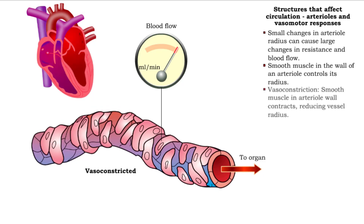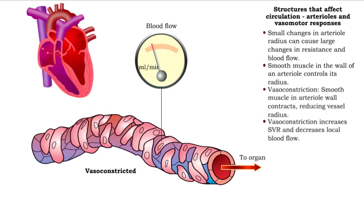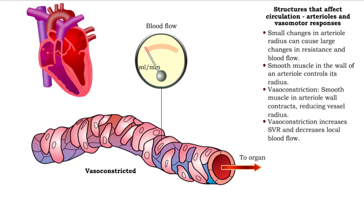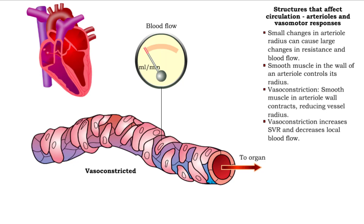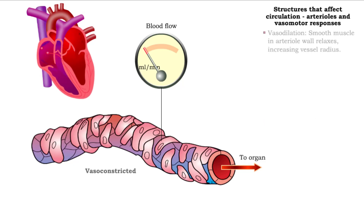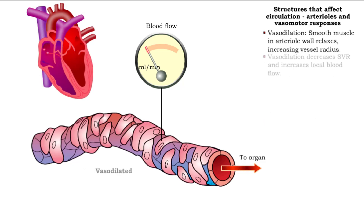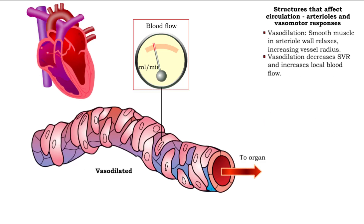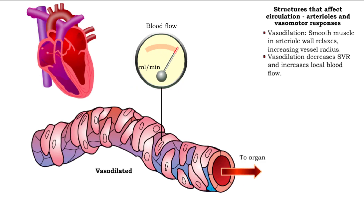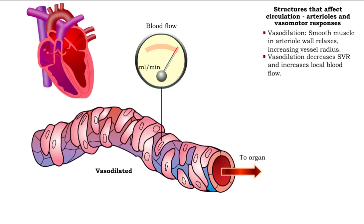Vasoconstriction of a vessel, brought on by smooth muscle contraction in the arterial wall, increases systemic vascular resistance and can reduce blood flow to almost nothing. Vasodilation of a vessel, brought on by smooth muscle relaxation in the arterial wall, reduces systemic vascular resistance and can dramatically increase blood flow.